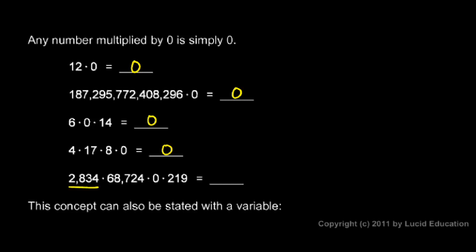Same thing down here. I see 2,834 times 68,724. I don't have to multiply those together - that'd be a lot of work. But I can see that 0 is a factor. As long as one of the factors is 0, the answer is 0.